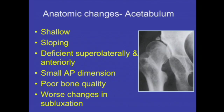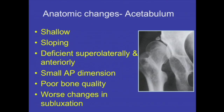On the acetabular side, the canal is very shallow and sloping, deficient superolaterally because of subluxation or dislocation, as well as anteriorly. While reaming, be very careful not to ream the anterior wall, as you may create a deficient anterior wall. The reamer should go more posteriorly. There is a small anterior-posterior dimension, so the cup size is usually determined by the AP diameter and is usually smaller. Because the bone is not loaded due to subluxation and dislocation, bones are osteoporotic or osteopenic, so be careful while reaming — sometimes hand reaming is performed.